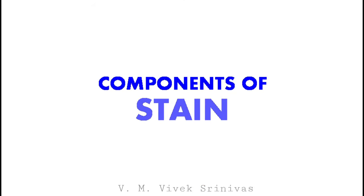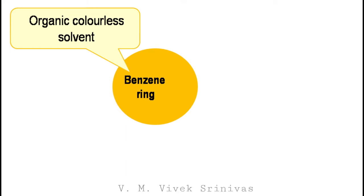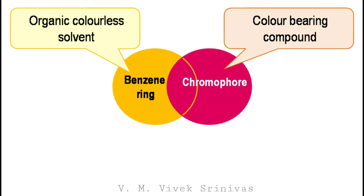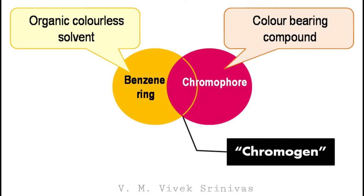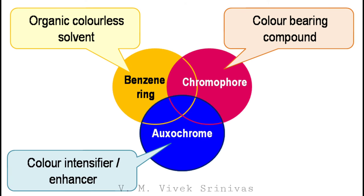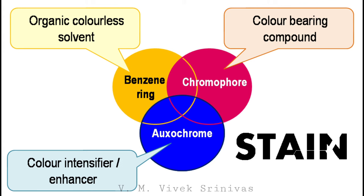Next, what are the components present in the stain? There are three constituents that make up the stain. Number one, the benzene ring — this is an organic, colorless solvent. Number two, the chromophore group — this is a color-bearing compound. This benzene ring and chromophore group together are termed as the chromogen. Lastly, the oxochrome — this is the color intensifier or the color enhancer.